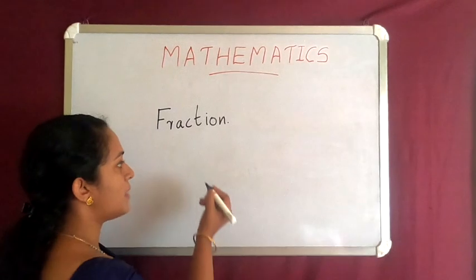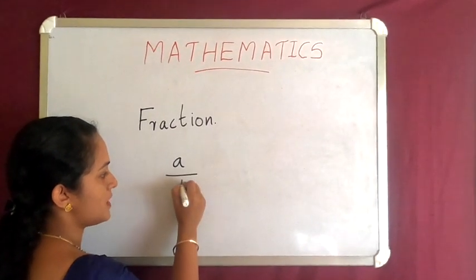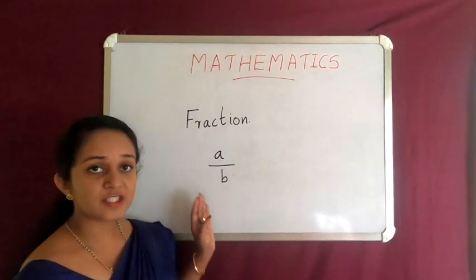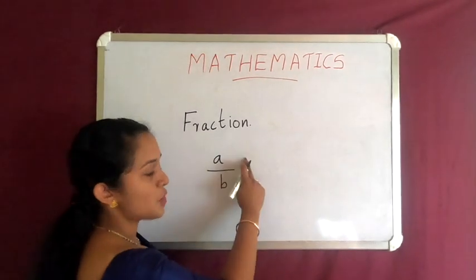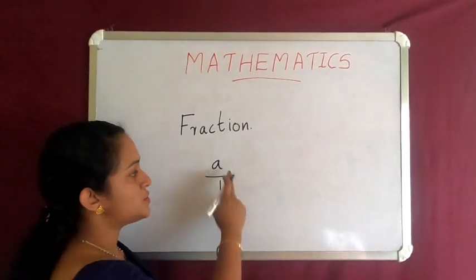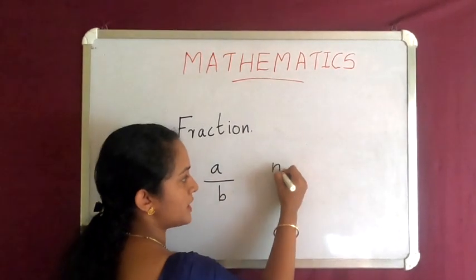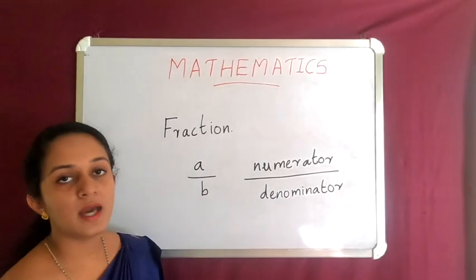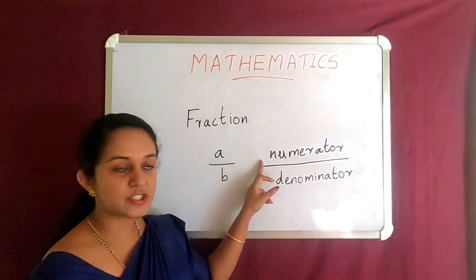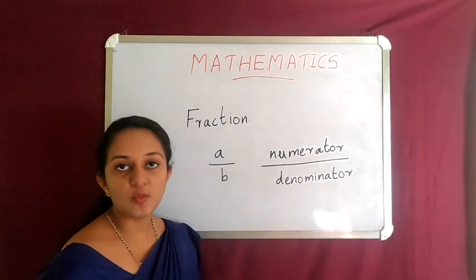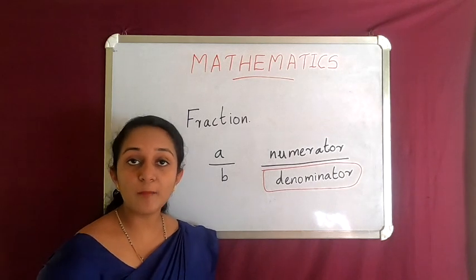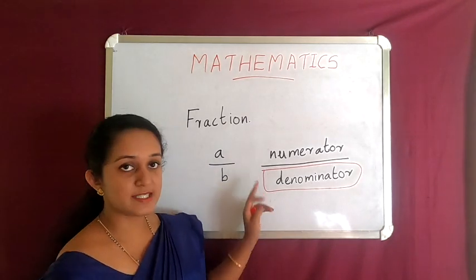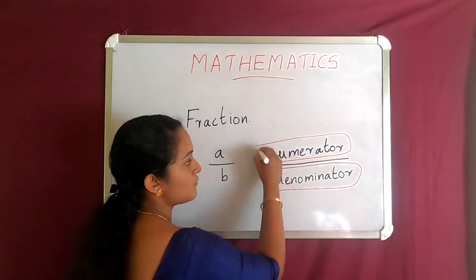Numbers of the form a over b are called fractions. A fraction has two parts: one top part and one bottom part. The top part is known as the numerator and the bottom part is known as the denominator. The denominator is the total number of equal parts into which the whole is divided, and the numerator is the number of equal parts that have been taken out.